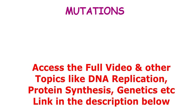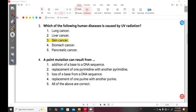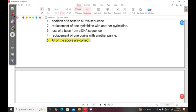So when you look at point mutations - for instance, this is your DNA - what happens in point mutation is one particular point of the DNA sequence is going to be changed. It could be an addition of a base, could be a replacement of that particular base, could be a loss, could be a replacement. Hence, the correct answer is all of the above are correct.